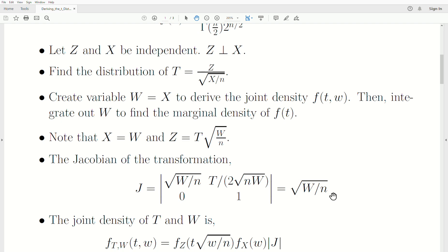The Jacobian of this transformation is this, and you think of it as: this is the derivative of Z with respect to T, and then this top right one is the derivative of Z with respect to W. This lower left is the derivative of X with respect to T, and then the derivative of X with respect to W.